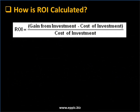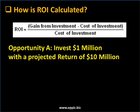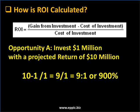How is ROI calculated? The formula is: ROI equals the gain from an investment minus the cost of that investment, divided by the cost of the investment. For example, in Opportunity A, you have an investment of $1 million with a projected return of $10 million. So the gain from the investment is $10 million minus the cost of $1 million, equals 9 divided by 1 — or 9 to 1, or 900%. Opportunity A offers us an ROI of 900%.